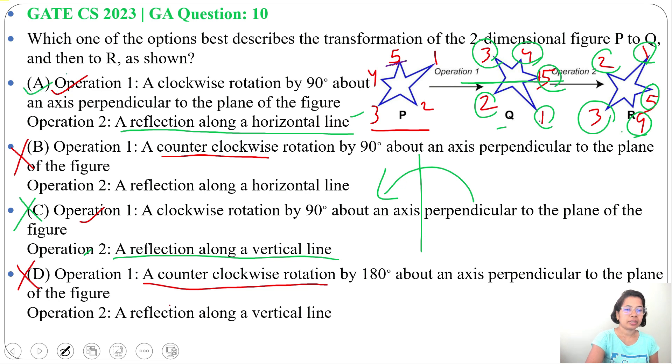So answer will be option A. From P to Q by 90-degree clockwise rotation, then from Q to R, it's a horizontal reflection.